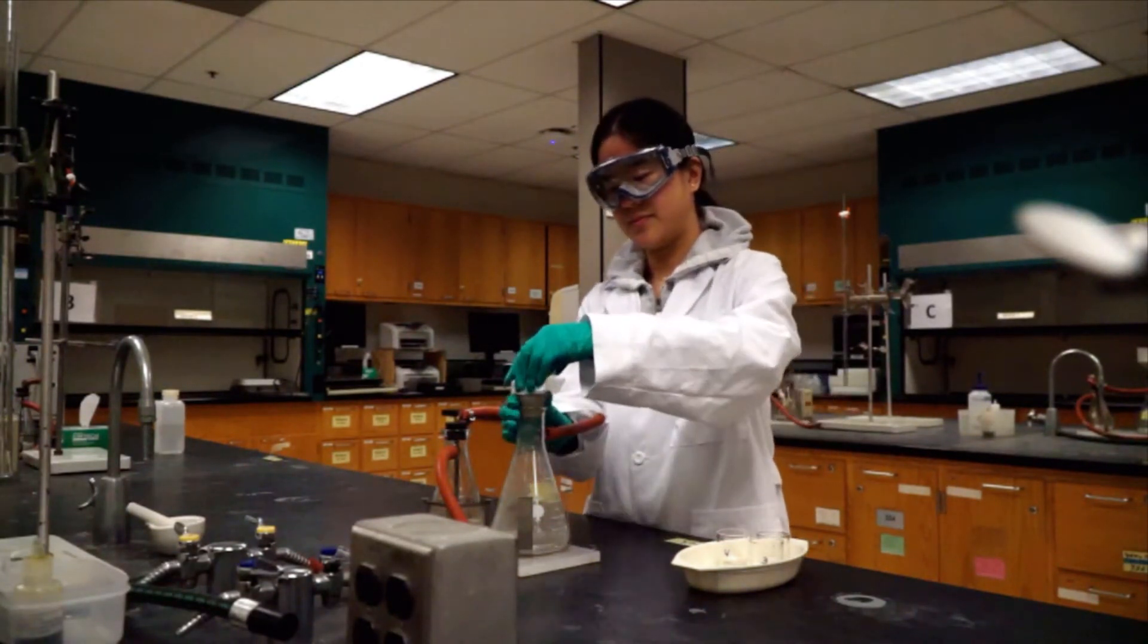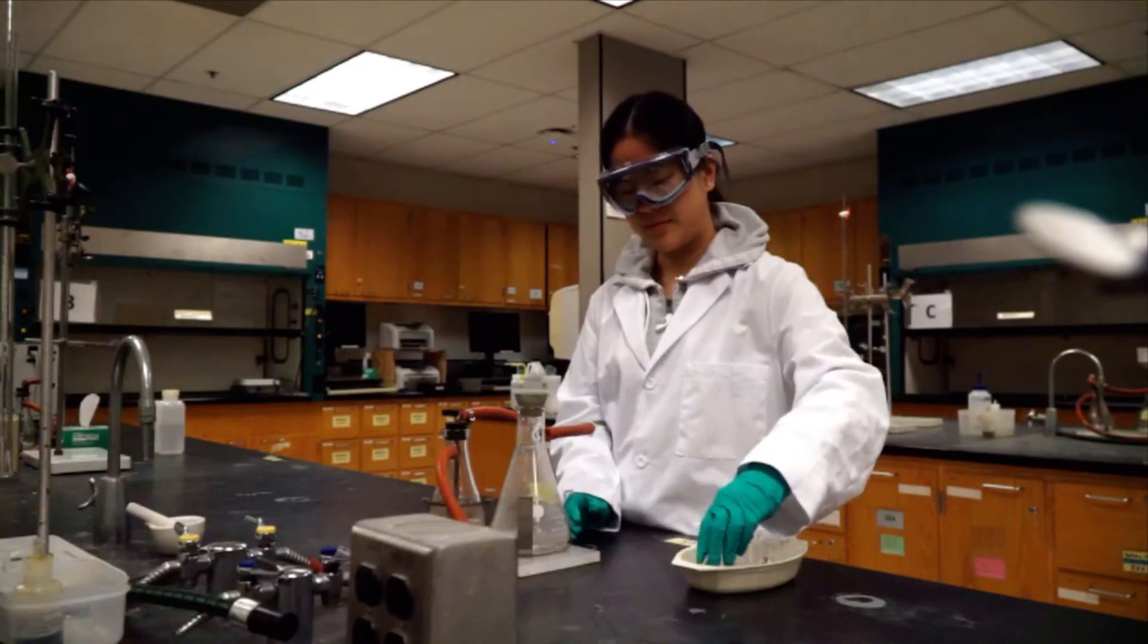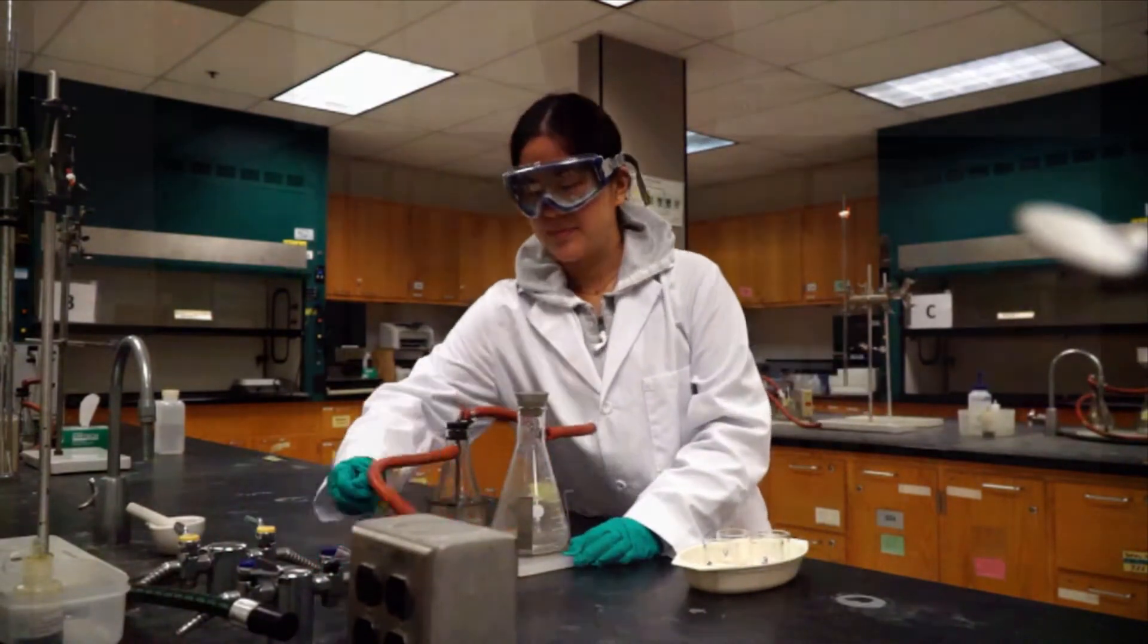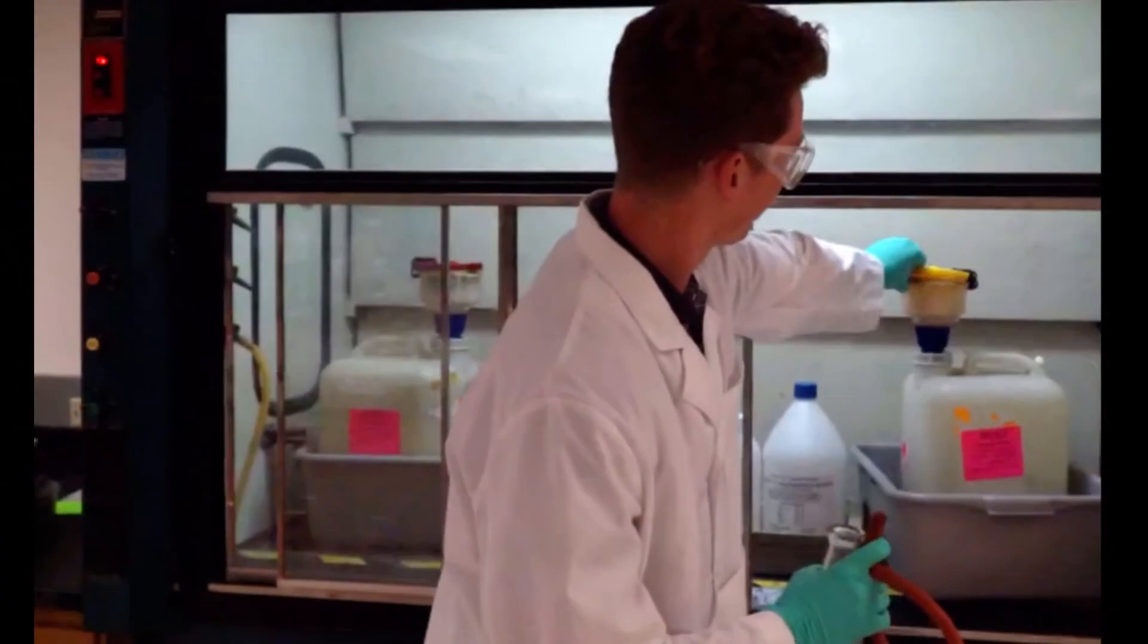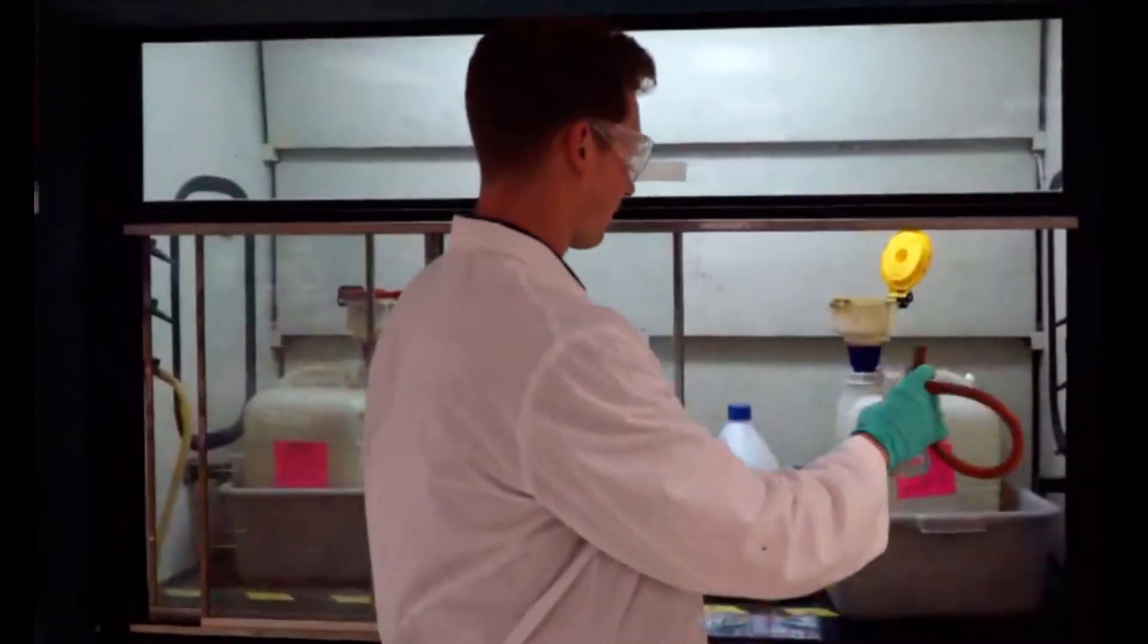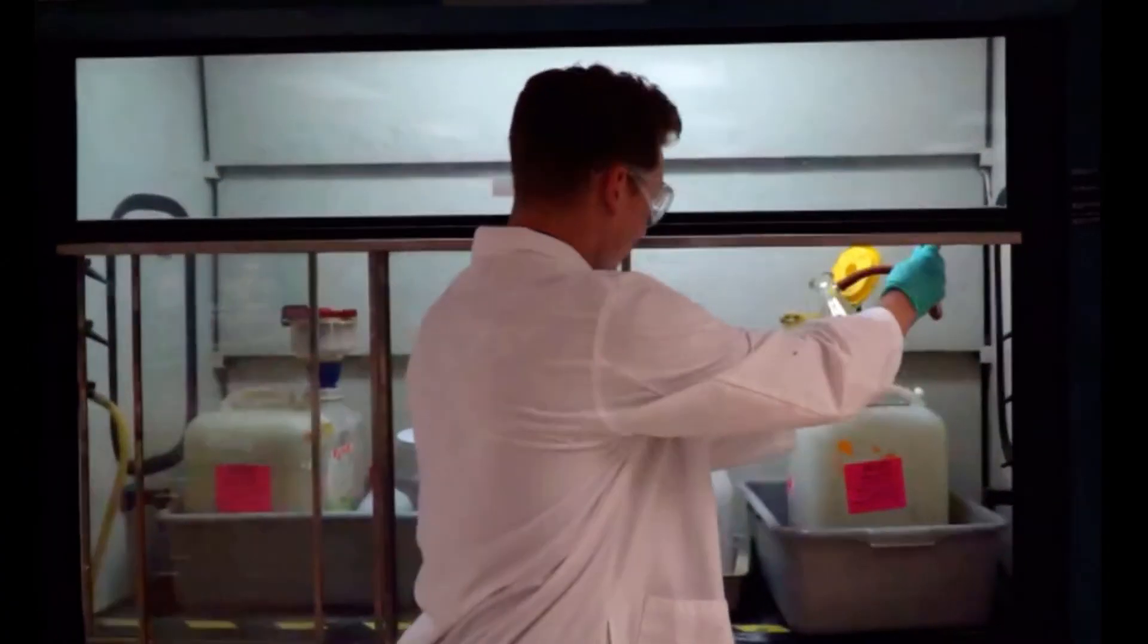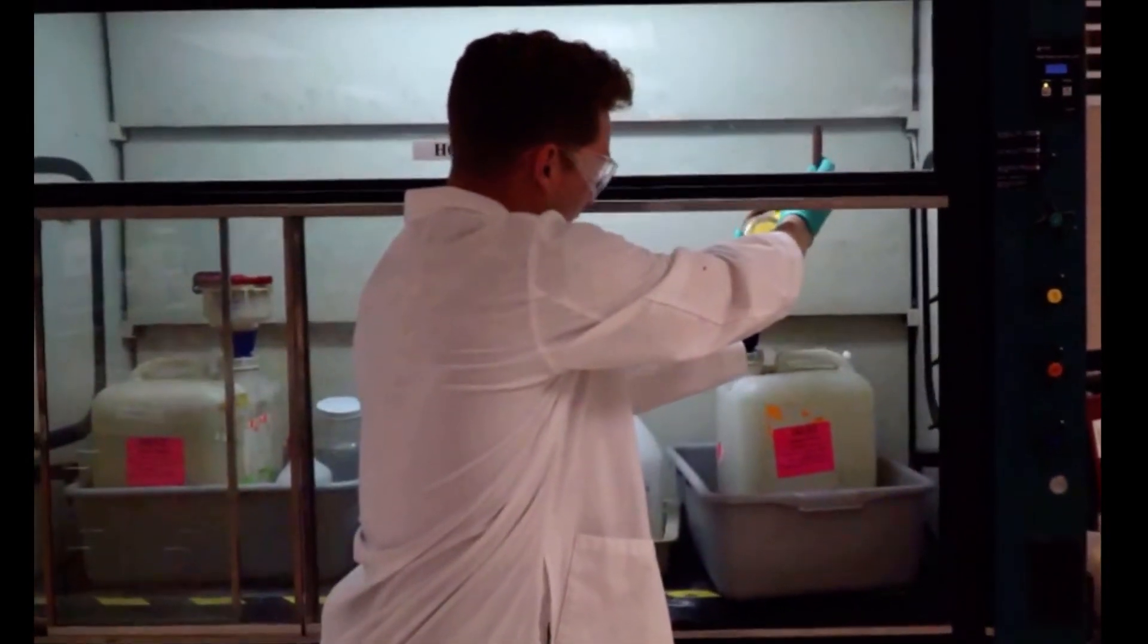When you're done filtering all four crucibles, don't forget to pull the hose off of the house vac nozzle. The proper way to dump liquids out of a filtration flask is to point the side nozzle upward, pouring the liquid out of the opposite side.